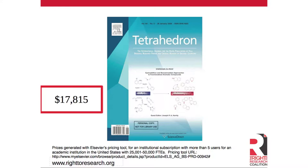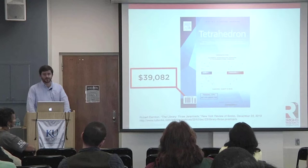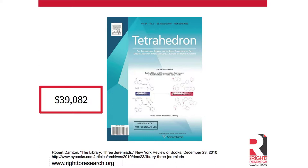It actually turns out that's a relative bargain. A couple of years ago, the head of Harvard's library reported that they paid just shy of $40,000 for their institutional subscription to this journal. I was talking to some of the librarians here before I came up to present — they said there are at least a number of subscriptions that are over $20,000 a year. So these things can be phenomenally expensive.